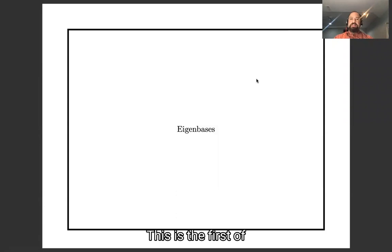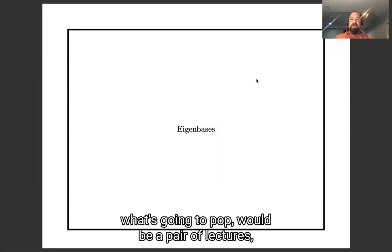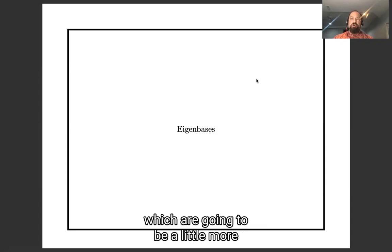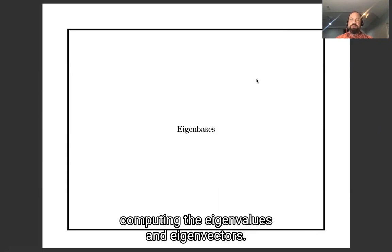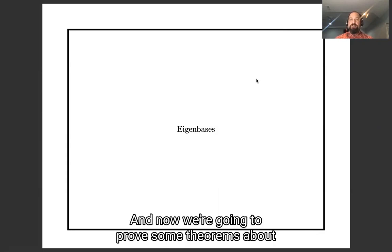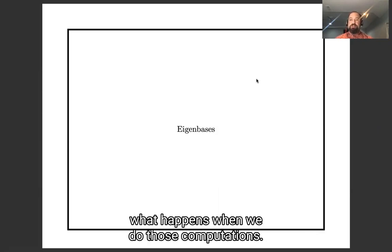Hello. This is the first of what's going to probably be a pair of lectures which are going to be a little more theoretical than we usually are. In the week nine lectures, we saw a lot of algorithms for computing with eigenvalues and eigenvectors, and now we're going to prove some theorems about what happens when we do those computations.